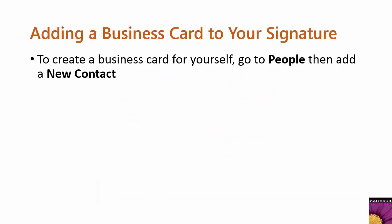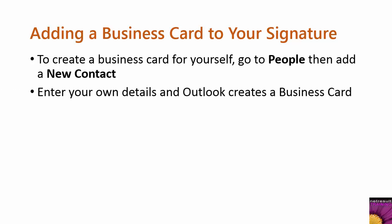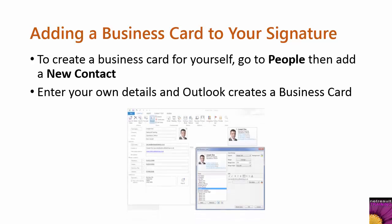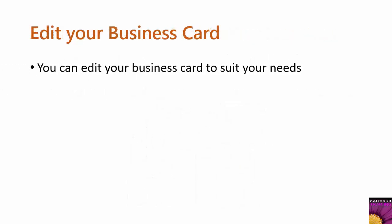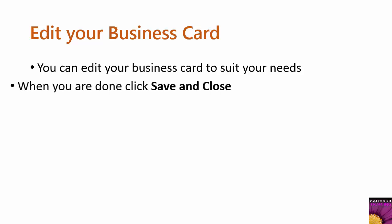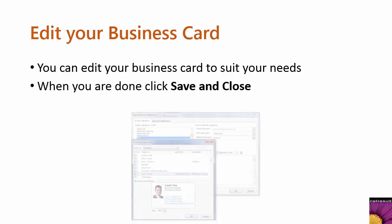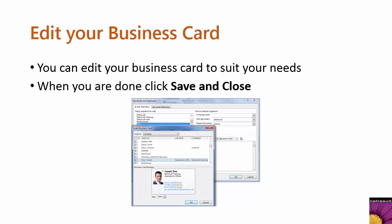Not many people realize that you can also add a business card. If you want to create a business card for yourself, you need to go to People — which is the new word for Contacts — and create a new contact. Enter your own details and Outlook will create a business card for you. It's a good idea at this point to add an image. You can edit your business card in any way that suits, and when you're finished editing click Save and Close. My business card for this fictional character Joseph Doe has now been created.